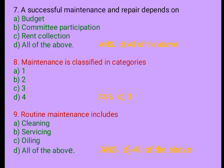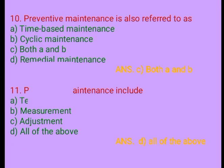Question 9. Routine maintenance includes: A. Cleaning, B. Servicing, C. Oiling, D. All of the above. Answer: D. All of the above. Question 10. Preventive maintenance is also referred to as: A. Time-based maintenance, B. Cyclic maintenance, C. Both A and B, D. Remedial maintenance. Answer: C. Both A and B.